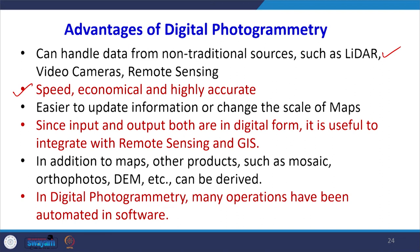It is easier to update information or change the scale of maps because information is dynamic and changes very fast. Updating maps from new photographs is very quick and easy. Input and output are available in digital form and can be integrated with remote sensing data or GIS data. Several products can be created — orthophoto, DEM, mosaic — and many processes in digital photogrammetry have been automated, minimizing human intervention so that input is required and the software takes care of the rest.